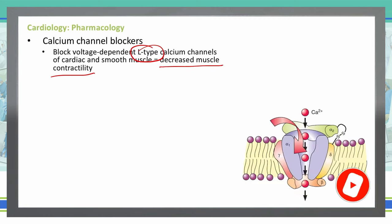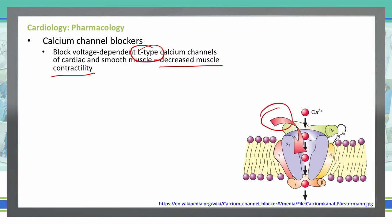If you look at the bottom right-hand side of the screen, we have an L-type calcium channel illustrated. Calcium channel blockers, represented by the red arrow, go in and physically block the calcium channel. If calcium is not able to pass through that channel, the cell won't have enough calcium inside to allow those muscles to depolarize and contract.